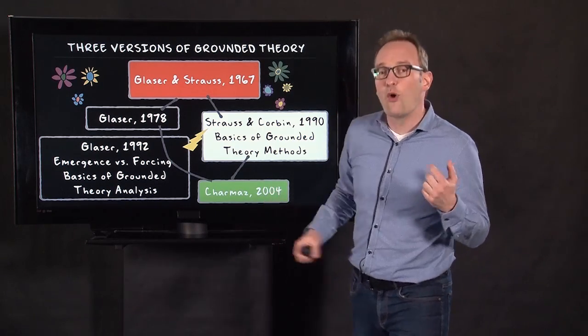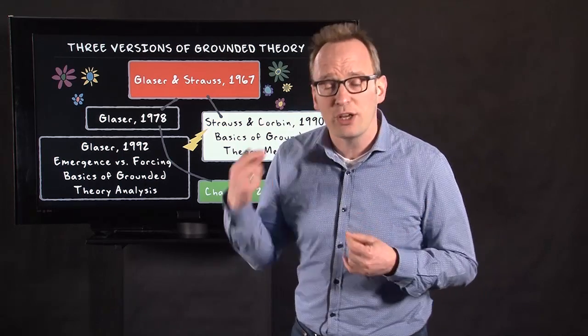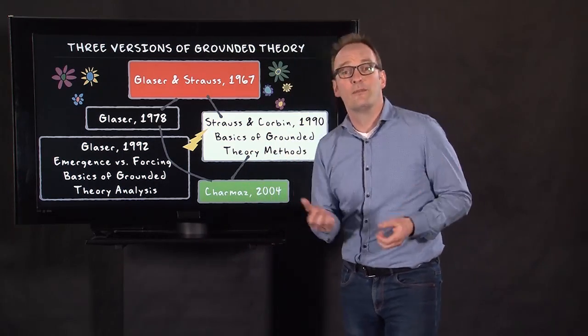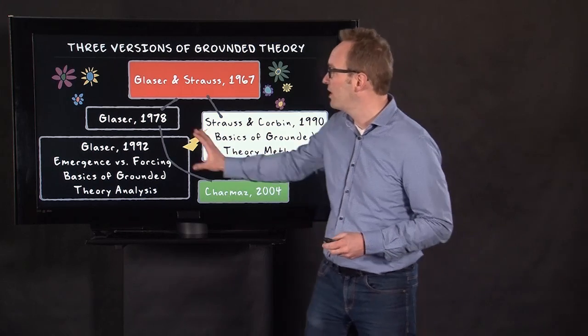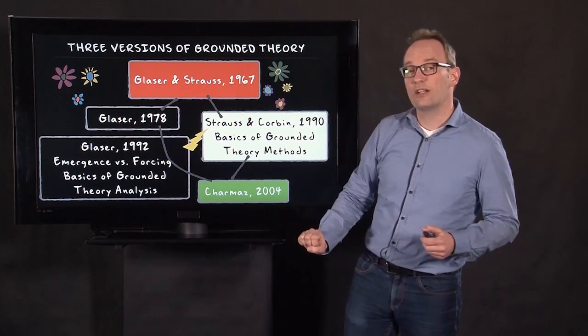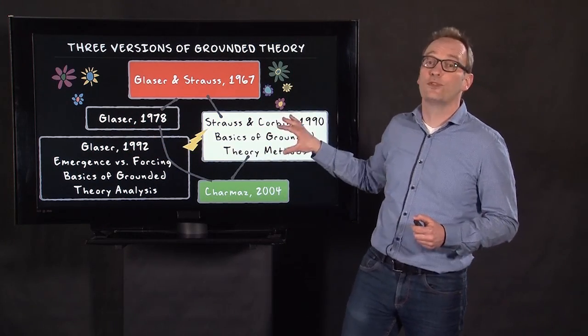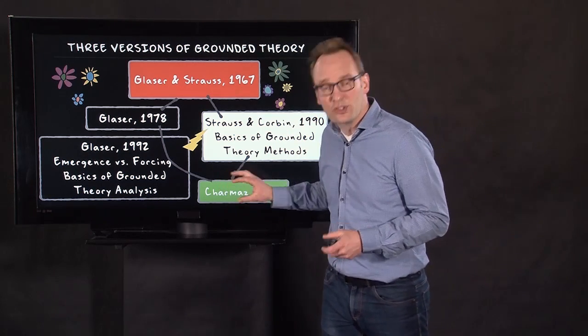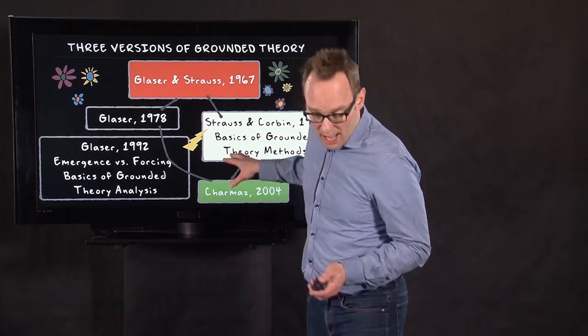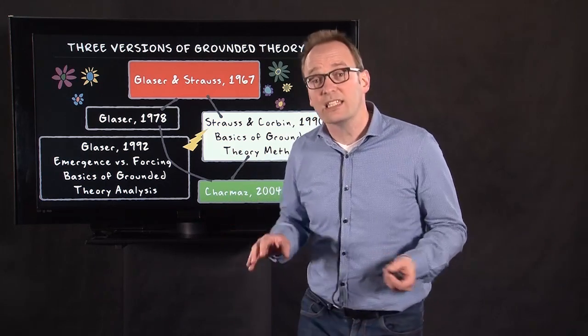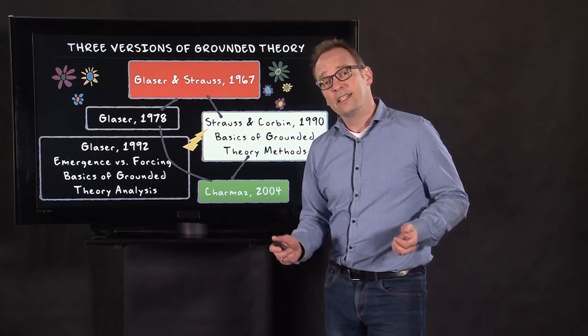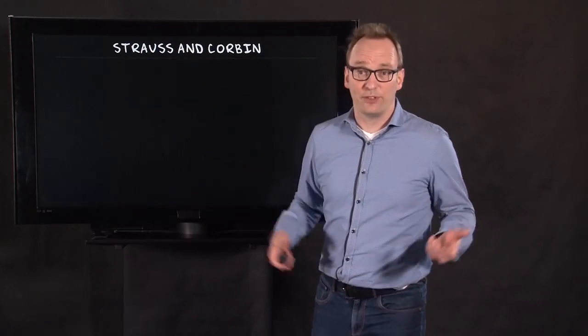And then in 2004, Kathy Charmaz wrote a book on constructivist Grounded Theory. So that's the third version. We have Glaserian Grounded Theory, what is often called Straussian Grounded Theory, and constructivist Grounded Theory as Kathy Charmaz and others are suggesting. So let's look at these three different versions.